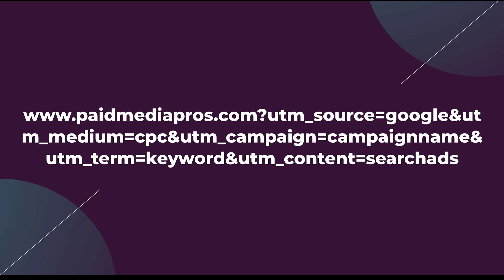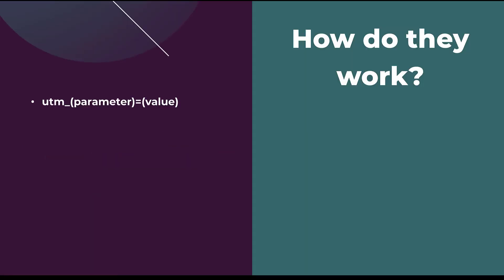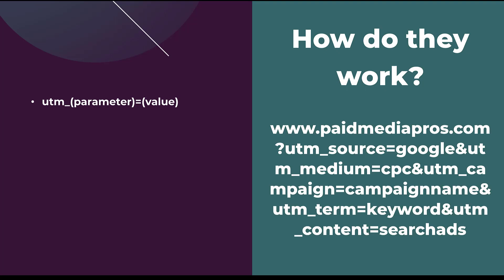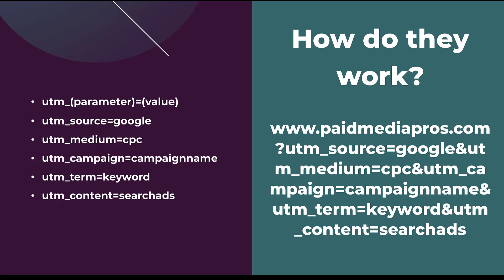Rather than go down that path, I want to focus on the parameters themselves. Basically the way these UTM parameters work: the language is always going to say UTM underscore — that part is going to be stable — and then the parameter itself is going to be different. And then there'll be an equal sign, and then whatever the value is that you want assigned to that parameter. So in the example we saw, we now have UTM source equals Google, UTM medium equals CPC, UTM campaign equals campaign name, UTM term equals keyword, and UTM content equals search ads.